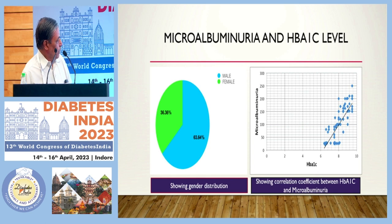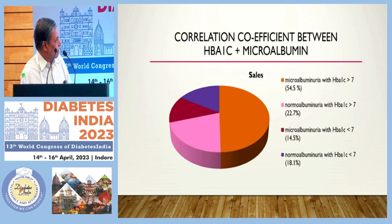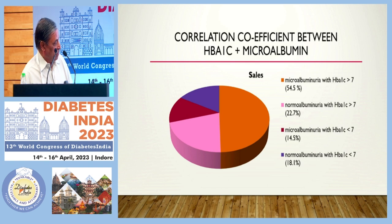Among the participants, 63% were male and 38% were female. HbA1c ranged from 6.4% to 10.5%. Microalbuminuria was present in 54% of patients when glycated hemoglobin was more than 7%, and in only 14.5% when HbA1c was less than 7%, with normal albuminuria at 18.5%.